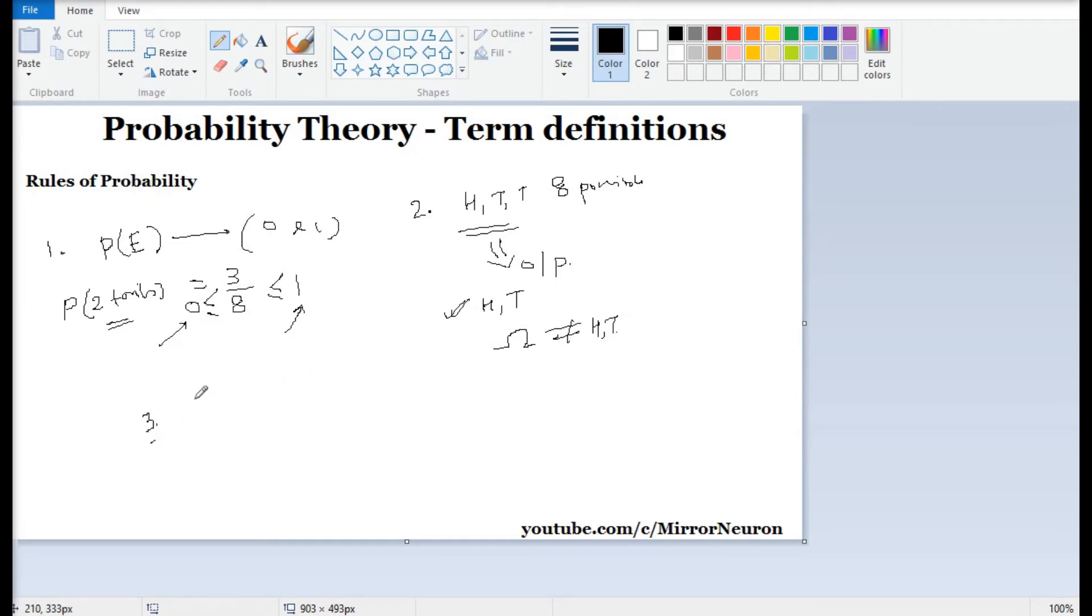The third rule says that if we have two independent outcomes or events, then the combined probability of them is equal to the sum of the individual probabilities. What I mean by that is, if I flip a coin, I am flipping one coin.